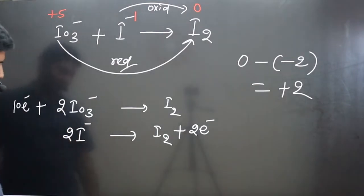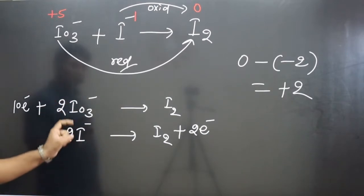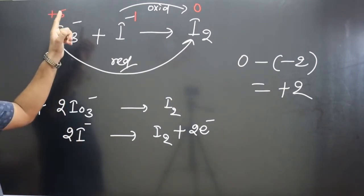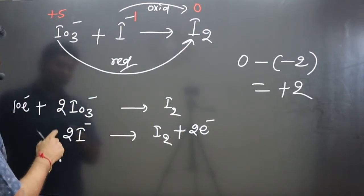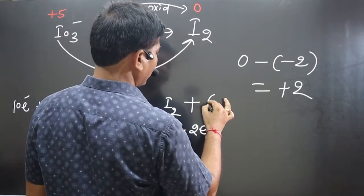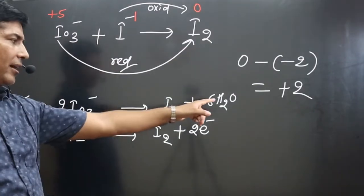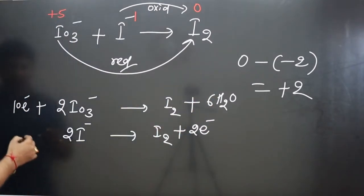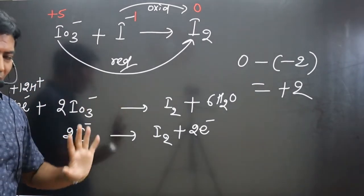In the first half-reaction, we now balance oxygen and hydrogen. Since H⁺ is present, the equation is balanced in acidic medium. There are 6 oxygens (3×2) in 2 IO₃⁻, so we add 6 water molecules to the right side. This introduces 12 hydrogens, so we add 12 H⁺ ions to the left side. The equation is now balanced in terms of atoms. We can proceed to combine both half-equations.